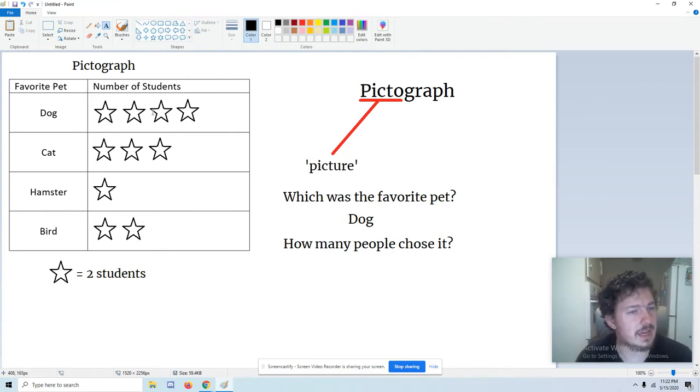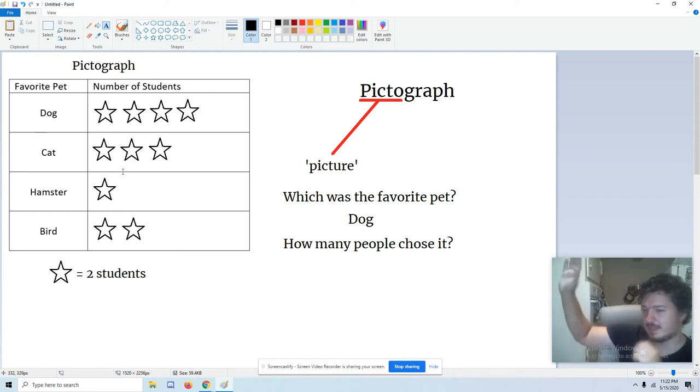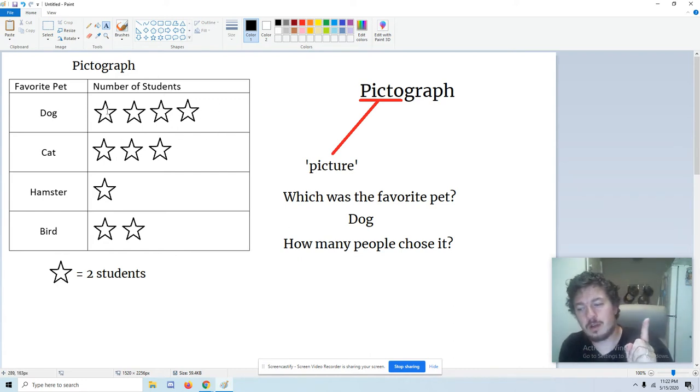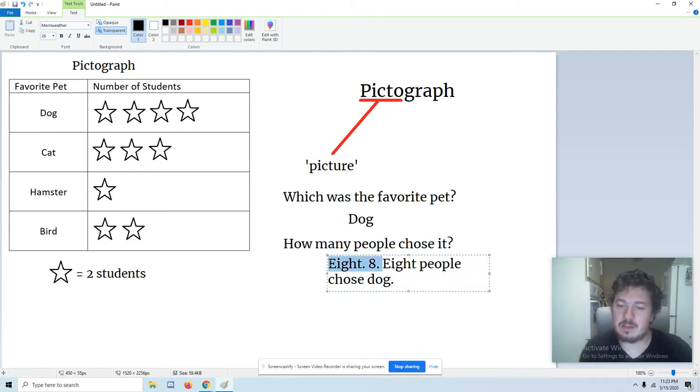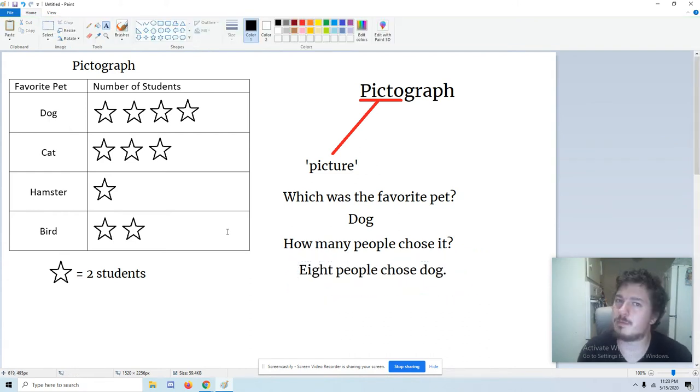How many people chose it, though? Is the answer four? No, because each star represents two people. If it helps, imagine two people putting their hands together like this. One person puts their hand this way, one puts their hand that way, and together they make a star. So two people, each star is worth two. So let's skip count by twos. Two, four, six, eight. Eight people chose dog, because there are four stars worth two people. It's always better to answer your question in a full sentence. That looks much nicer, doesn't it?